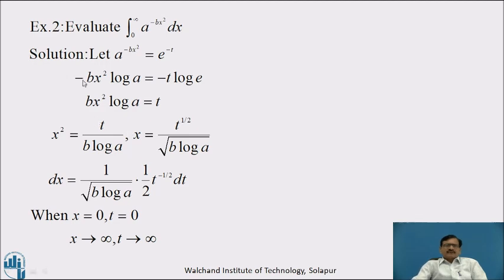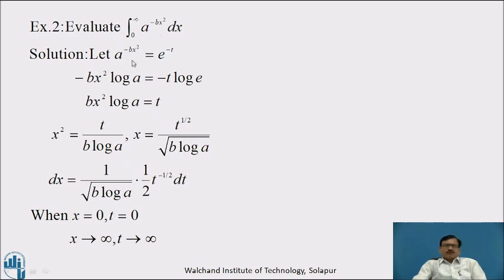Now we will see the next example. Evaluate the integral from 0 to infinity of a raised to minus bx square dx. Here the base is a, so we have to convert this to base e. To express this integrand in terms of the exponential function, we use the substitution a raised to minus bx square equal to e raised to minus t.